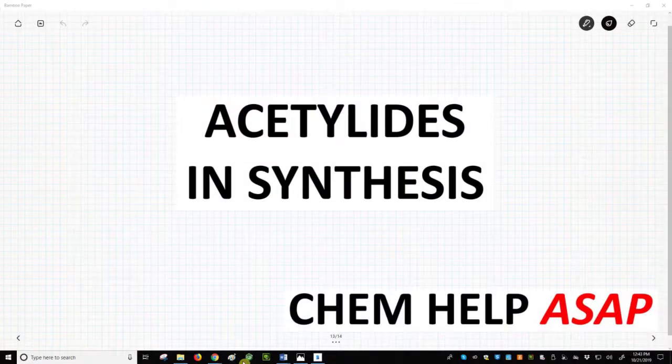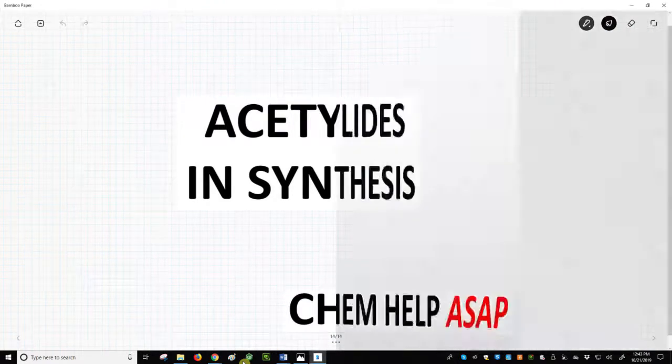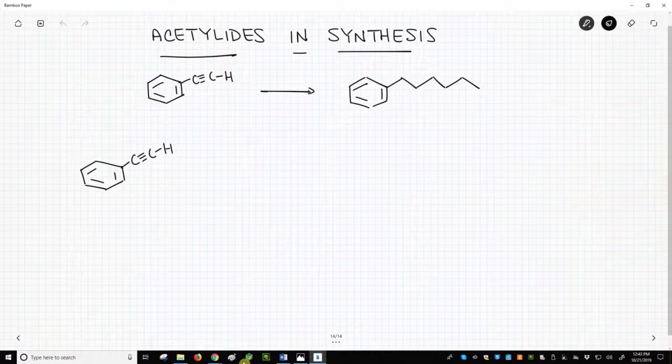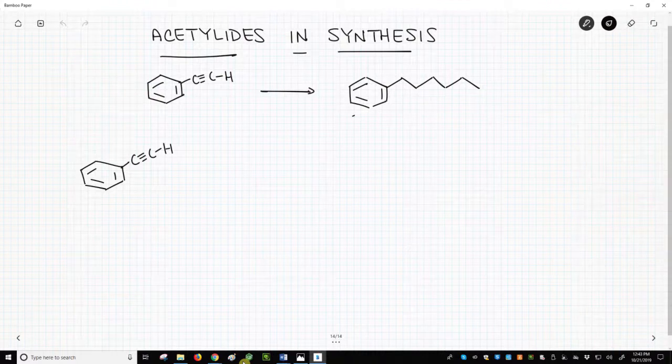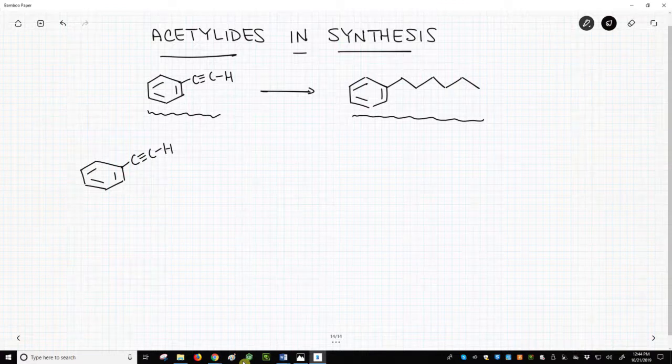Welcome to Chem Help ASAP. Let's use the new chemistry that we've learned on the topic of acetylides to make something. Let's say we need to make the molecule in the upper right, and we are provided with a starter material of phenyl acetylene, which is shown in the upper left. How would we accomplish this transformation?